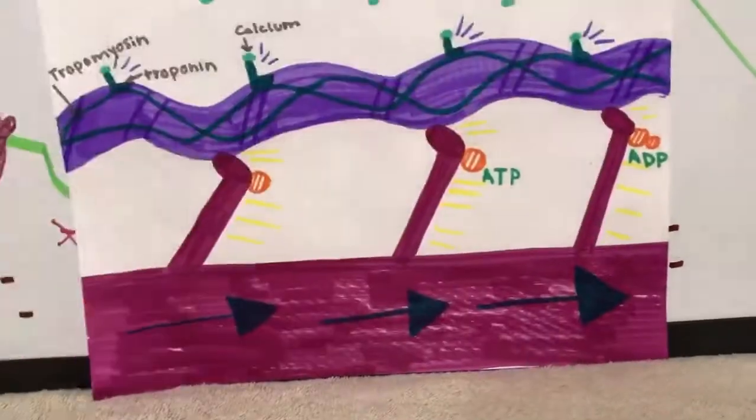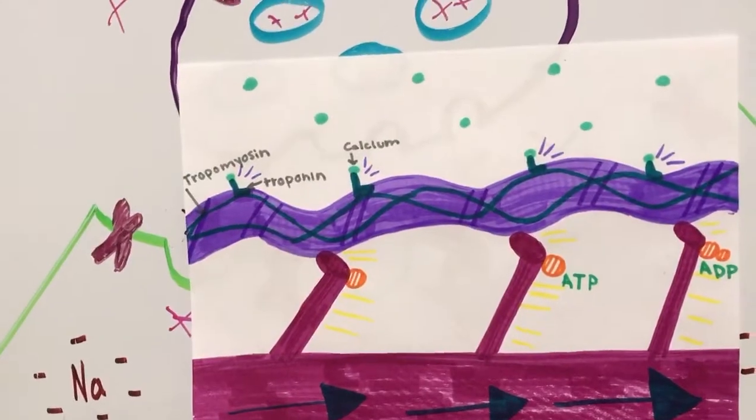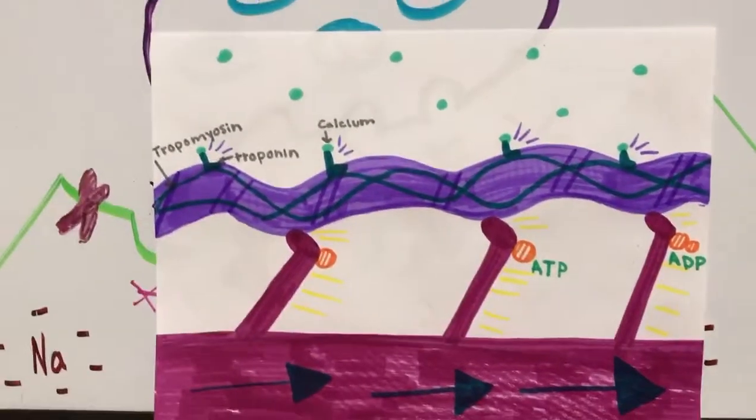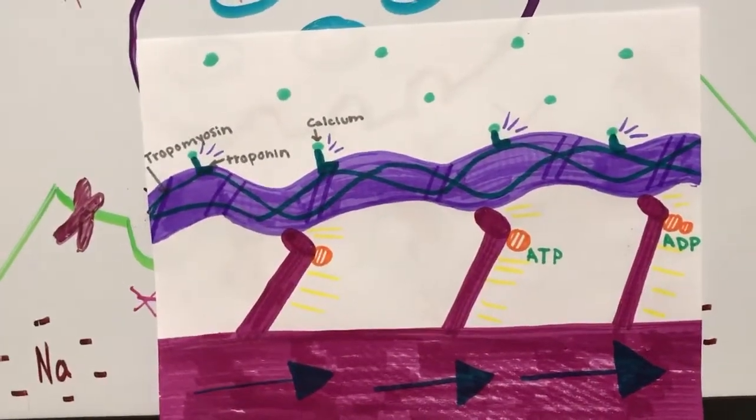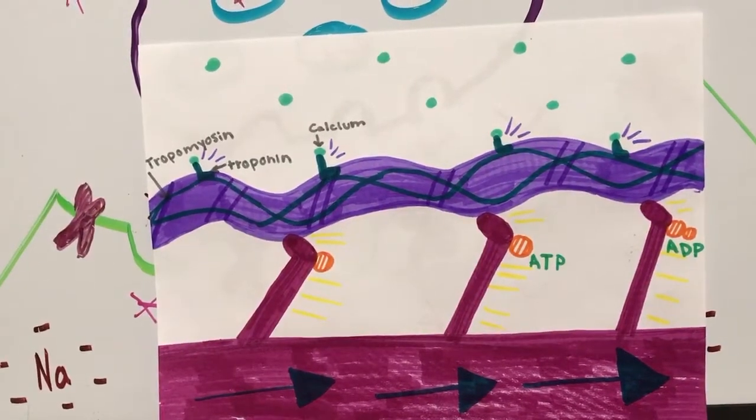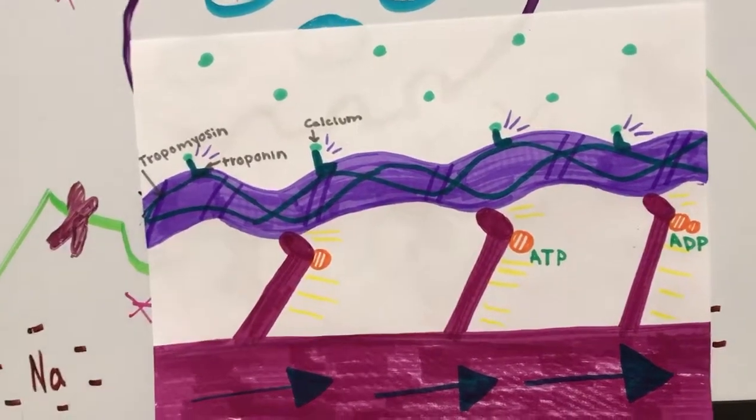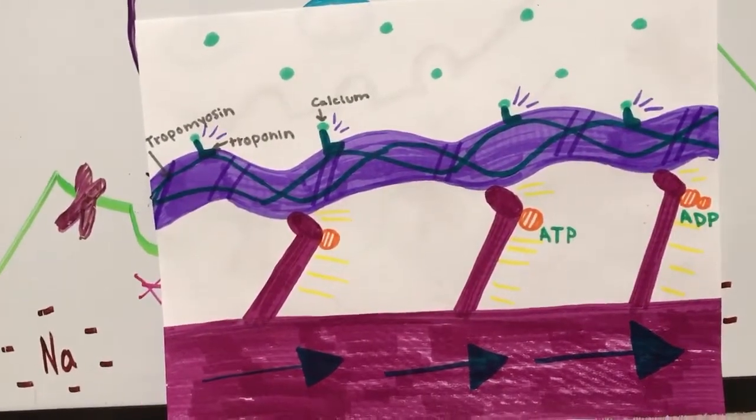So, then we're going to go back to this picture. And the troponin and tropomyosin are then released from the calcium, causing the troponin to return to its normal shape.